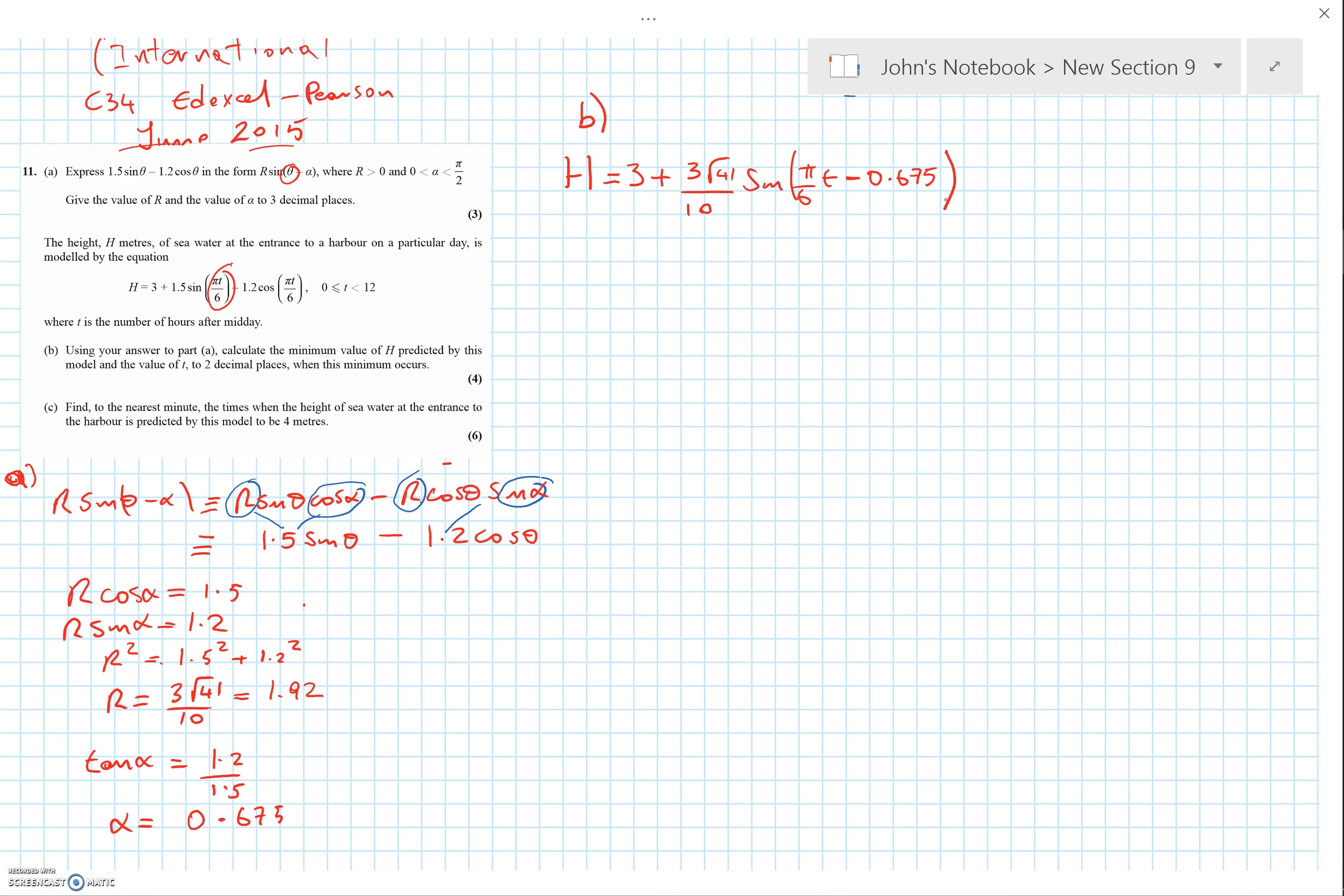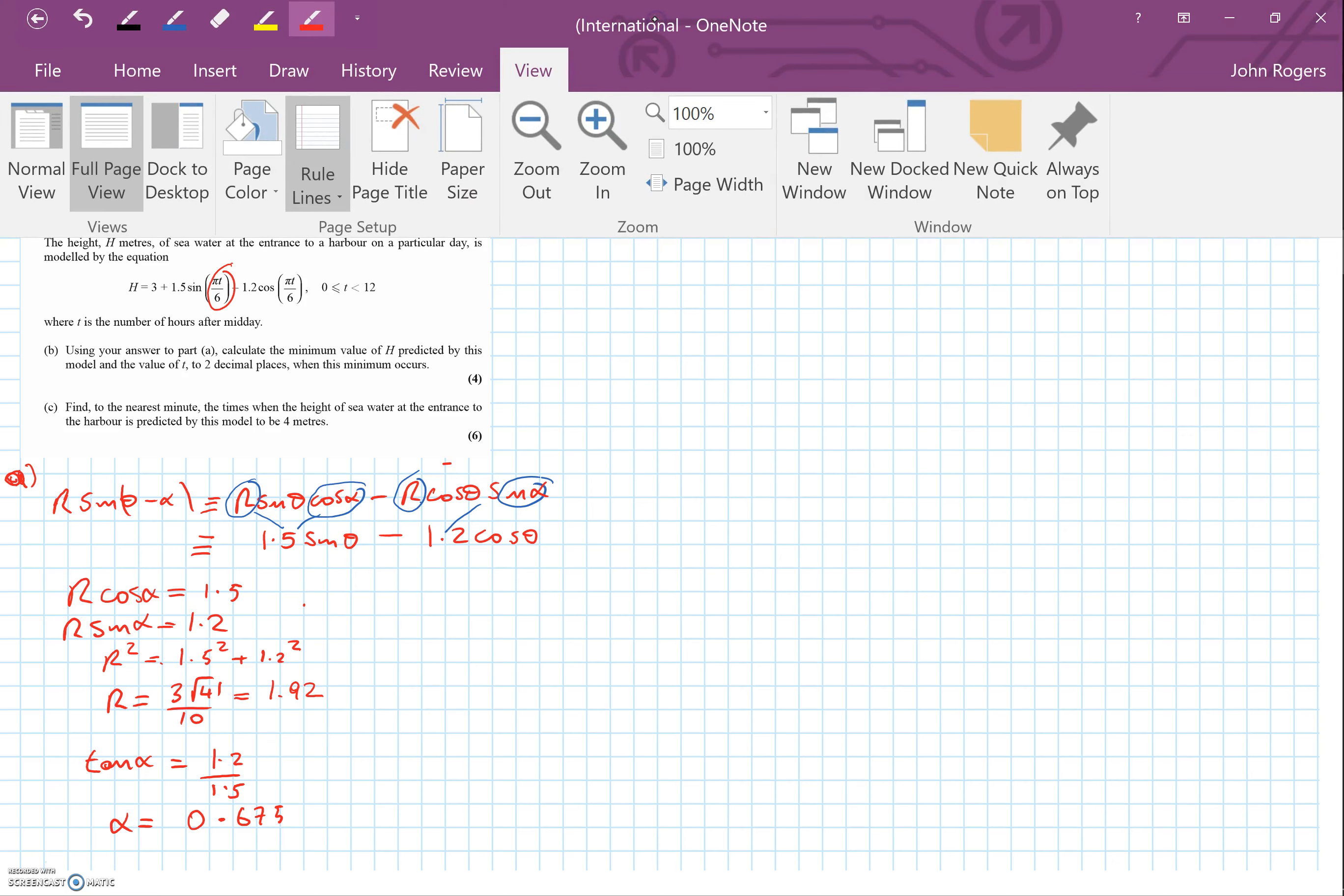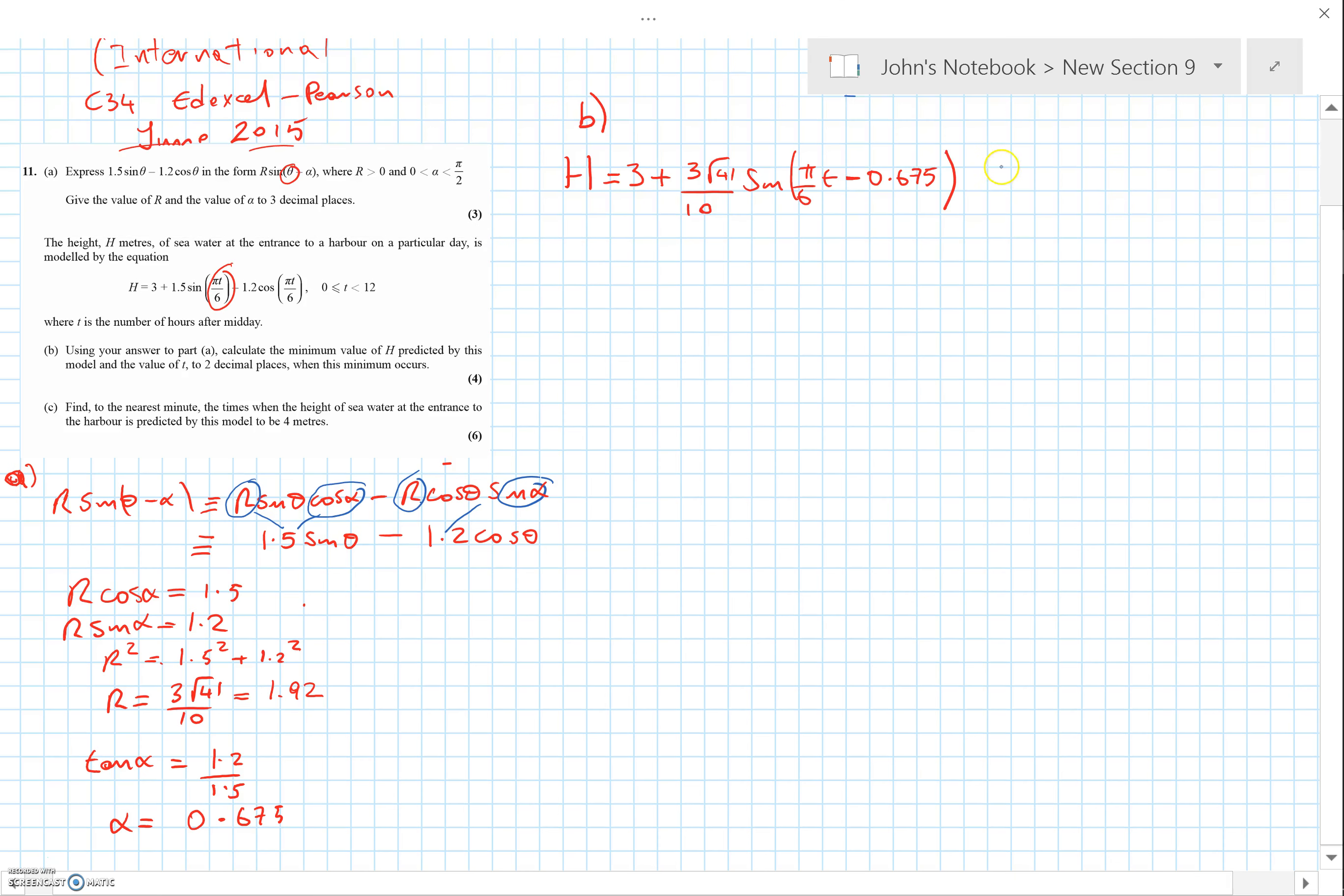I'm going to quote α to three decimal places but I've got the numbers stored in my calculator to work with and get an accurate answer at the end. Now, a lot of people misunderstood this. We want the minimum value, and the minimum value of this function is going to occur when the function takes its least value, which occurs when the sine bit equals minus one.